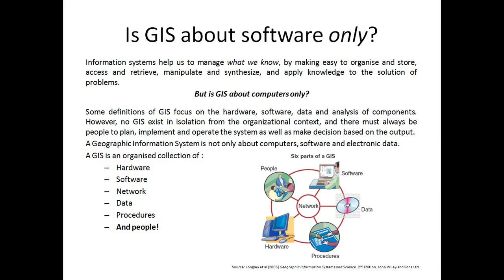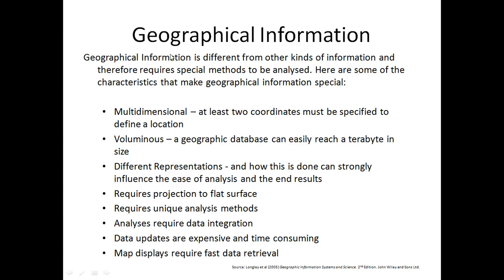If GIS were computers only — some definitions of GIS focus on hardware, software, data, and analysis components — however, no GIS exists in isolation from an organizational context. There must always be people to plan, implement, and operate the system, as well as to make decisions based on the output. Geographic information is not only about computer software or data; it is hardware, software, network, data, procedures, and most importantly, the people. GIS is a combination of hardware, software, data, and human.